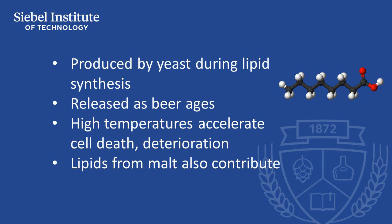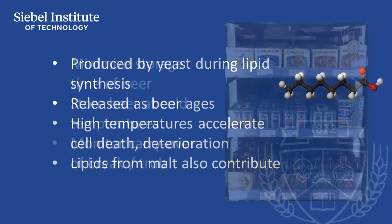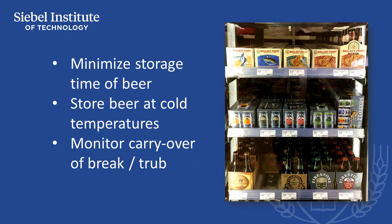Lipids from malt can also contribute to fatty acid formation if they have been carried into wort in the form of break from the whirlpool. Brewers should minimize the time the yeast is stored on beer at the end of fermentation through maturation, store the beer at cold temperatures, and monitor the amount of break carried over from the whirlpool.